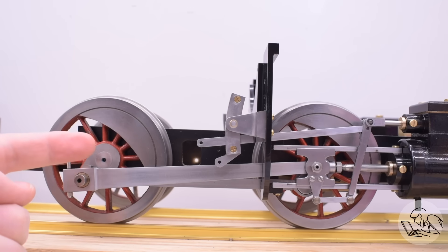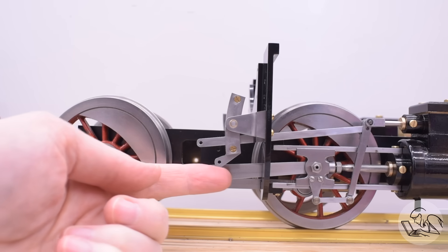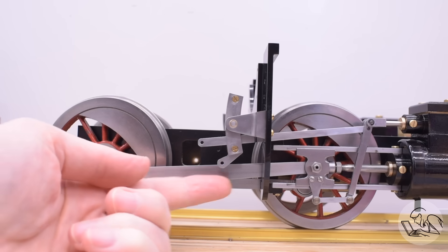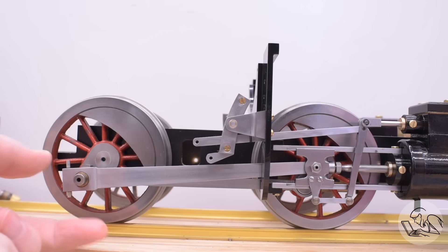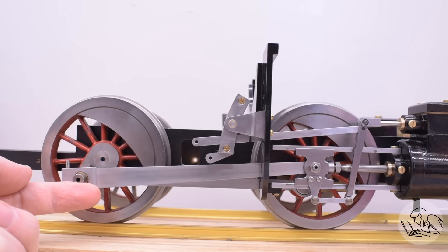Back here on the main rod crank pin there's extra space for the return crank and that's what actually swings the expansion link back and forth and ultimately moves the valve. So pretty important little thing back here.